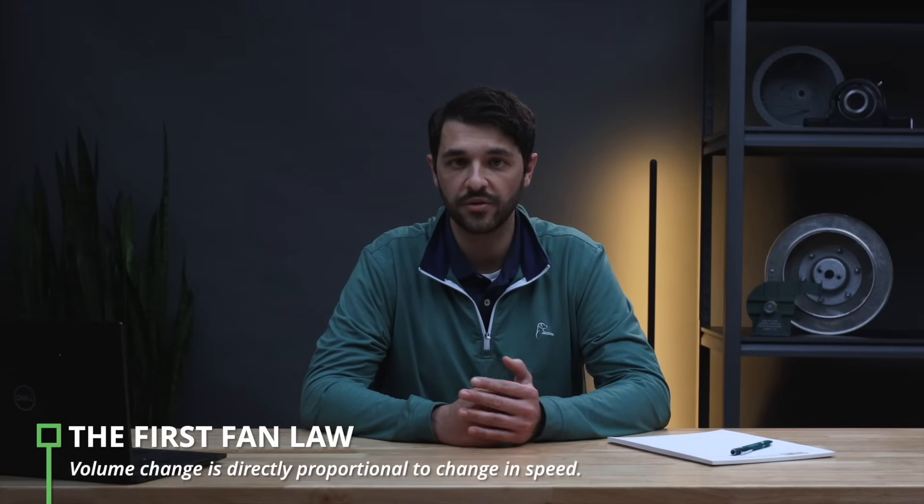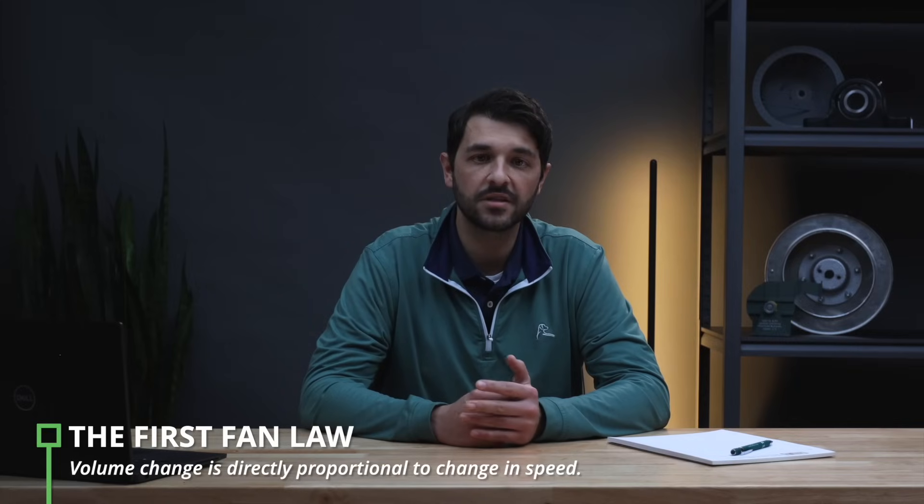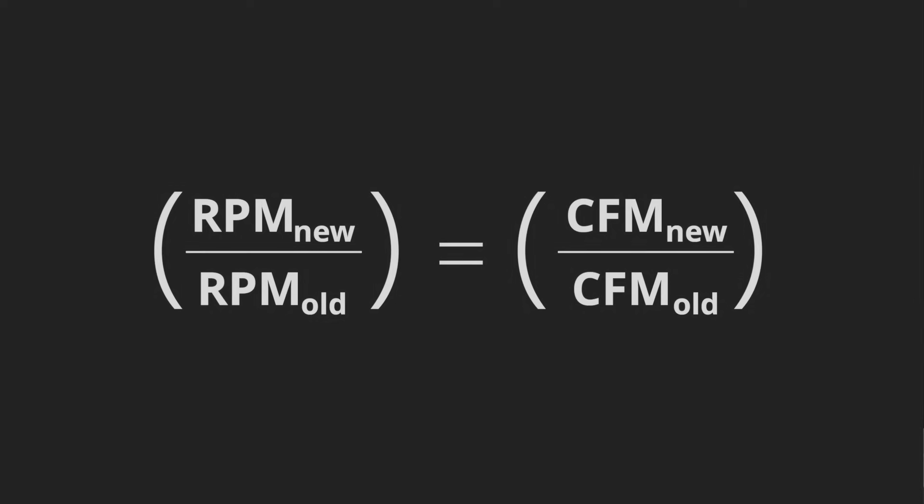With those concepts in mind, we can define the first three fan laws. The first fan law describes how airflow changes in response to a change in speed, and the change is a one-to-one ratio. This can be conceptualized by thinking of the blades on a wheel as a set of equally-sized shovels, each moving an equal amount of matter with each rotation. By changing the speed, you change the frequency with which each shovel moves an equal amount of matter — in other words, it changes at a one-to-one ratio. Algebraically, the change in speed (new speed divided by old speed) equals the change in flow (new flow divided by old flow).